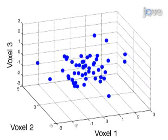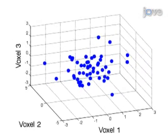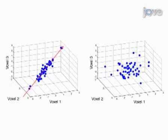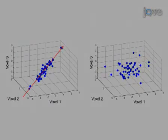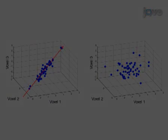Univariate analysis does not pay attention to the correlation between voxels. Both panels seen here would be treated in an identical manner by univariate analysis.